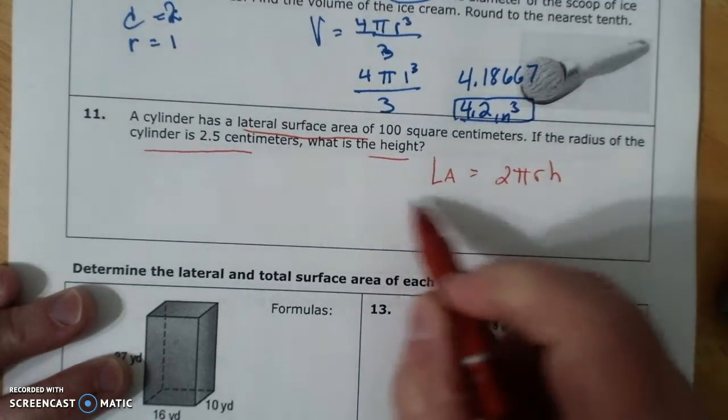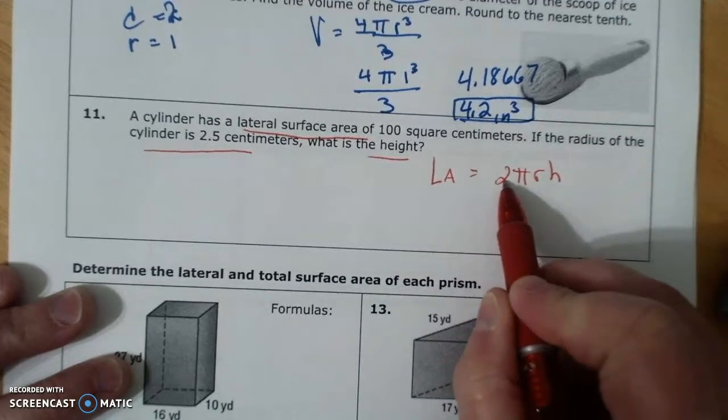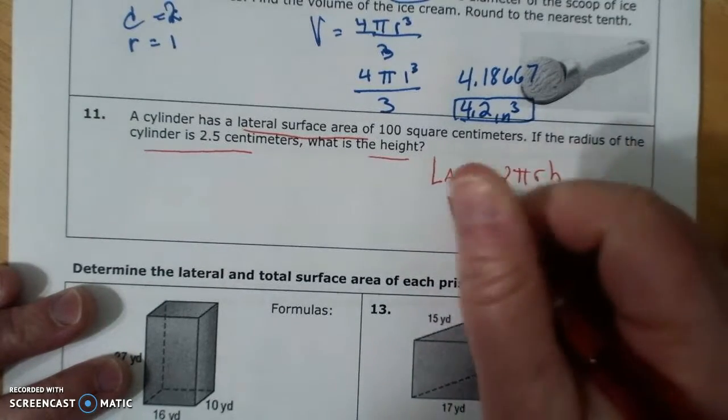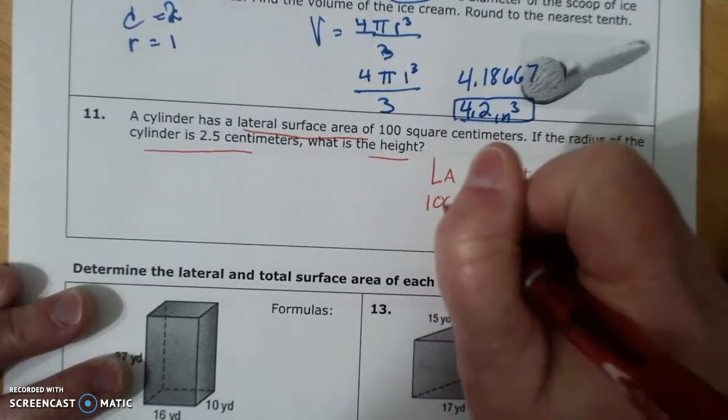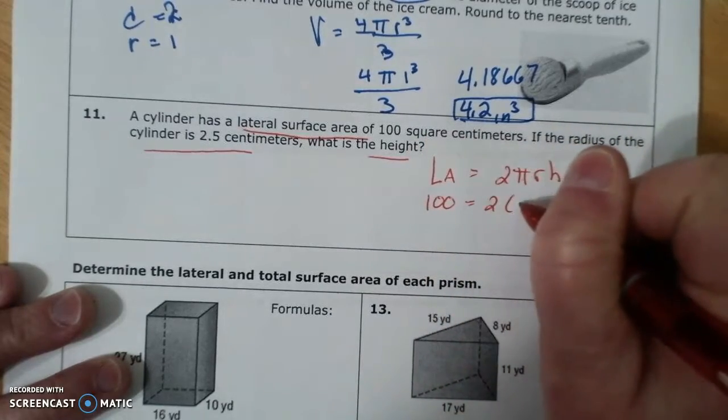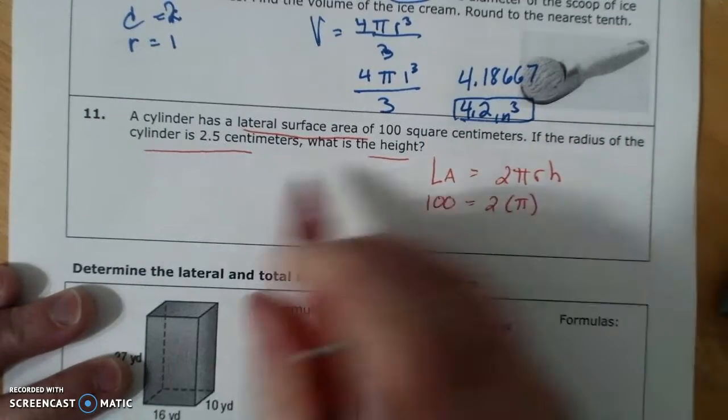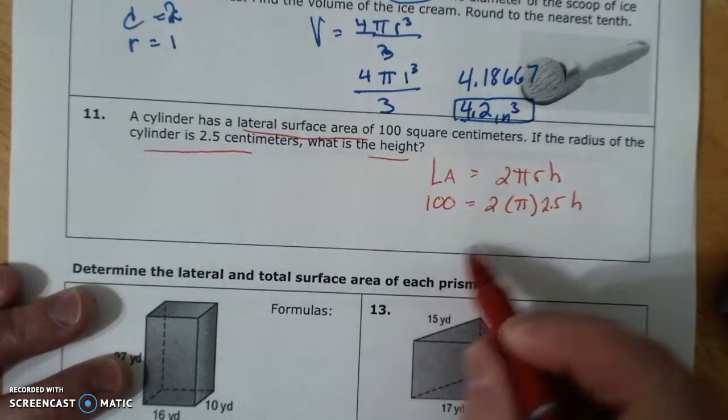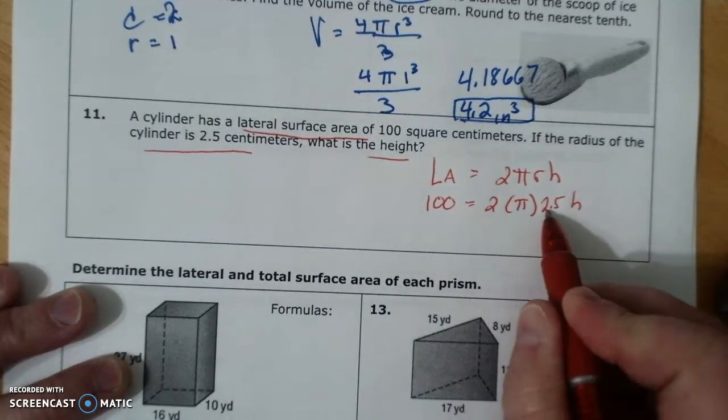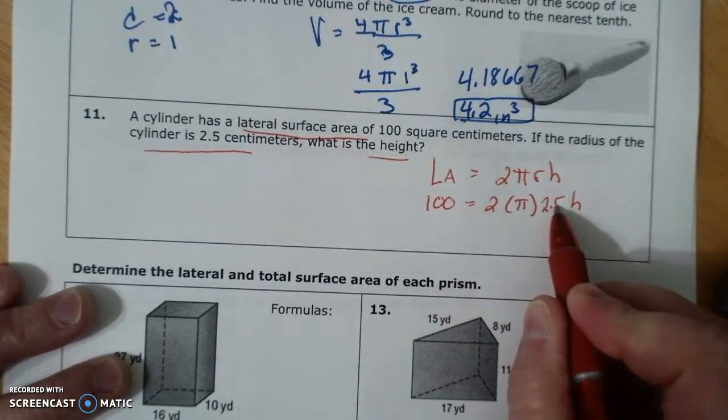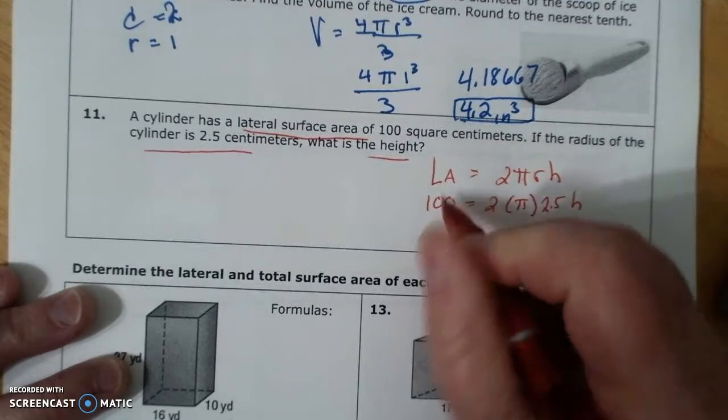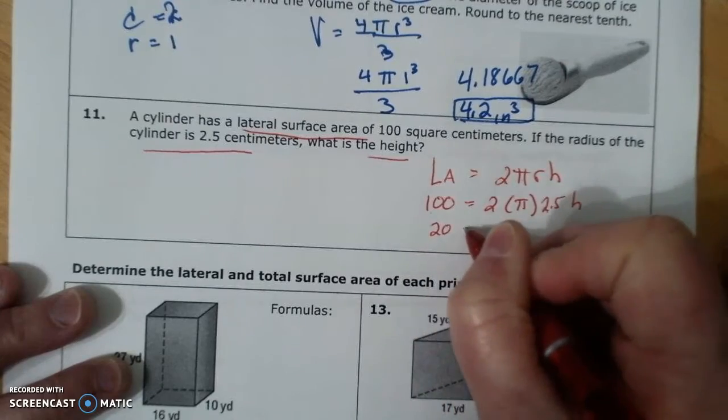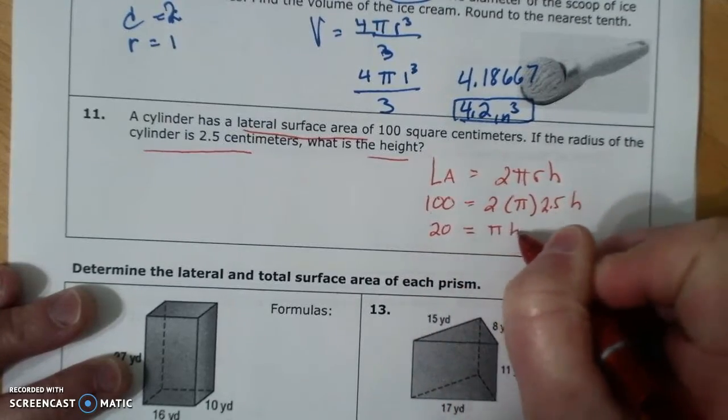I know lateral, I know 2, I know pi, I know r, and I don't know h. So lateral is 100. 2 times pi times radius is 2.5 times h. 2 times 2.5 is 5. 100 divided by 5 is 20 equals pi h.